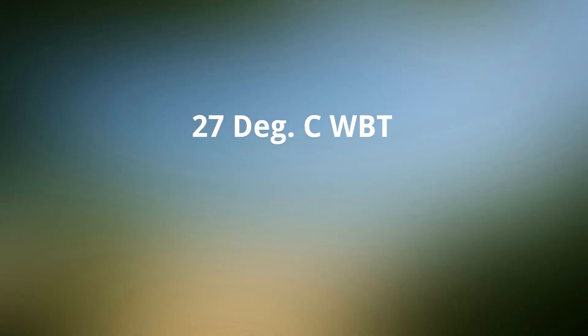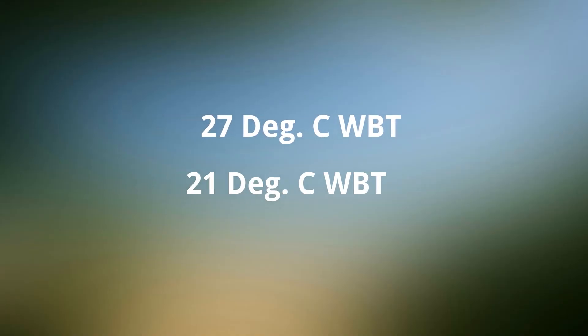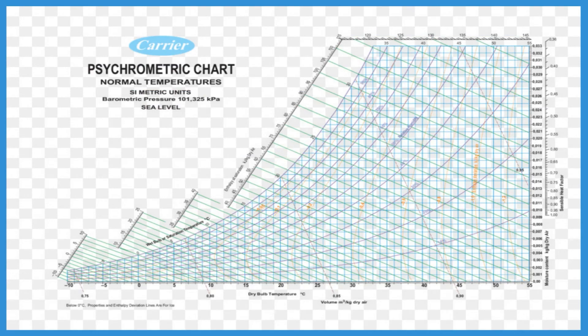Let us do a very simple exercise. We will find 27 degrees centigrade WBT and 21 degrees centigrade WBT. To find 27 degrees centigrade WBT, we have to see the range between 25 and 30 — and here is the 27 WBT line.